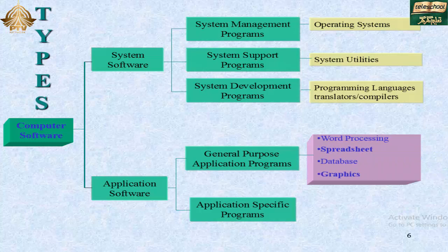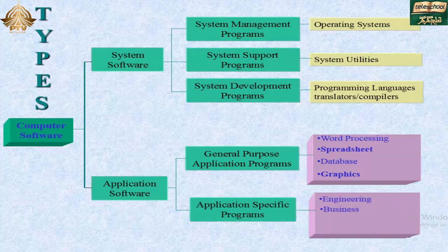General purpose application programs include word processing, spreadsheet, database, graphics, and application-specific programs. Application-specific programs cover engineering, business, education, and entertainment. These are the types of computer software.